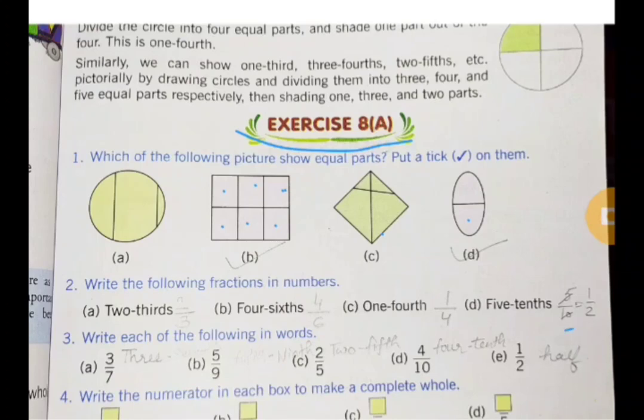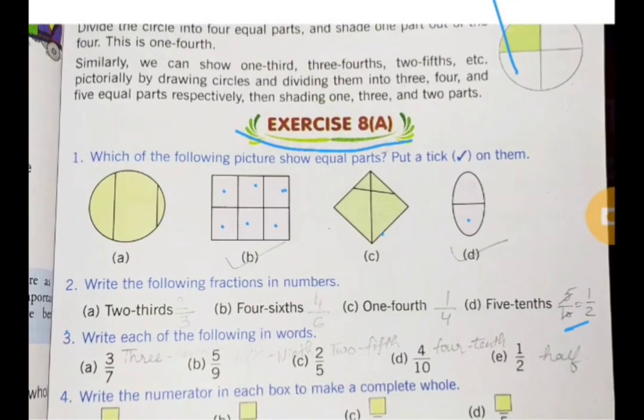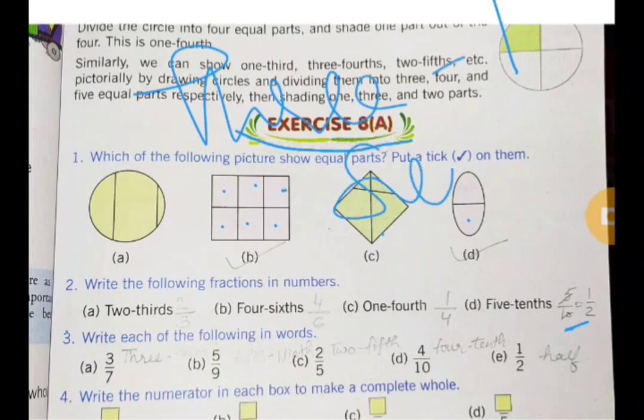Third: Write each of the following in words. 3 by 7 we write as three-sevenths.